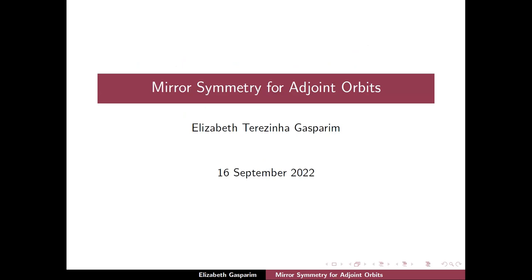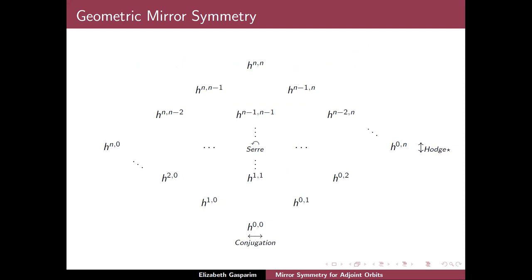I will say something about mirror symmetry for adjoint orbits. First, I want to show where the mirror used to be originally when mirror symmetry was a geometric thing. In the classical Hodge diamond, we know the classical symmetries: conjugation, Serre duality, and Hodge symmetry. Mirror symmetry in the geometric case means that if you have a variety with a certain diamond, you expect a dual variety whose diamond is obtained by exchanging the colors — red and black — so the mirror is this line where one reflects.